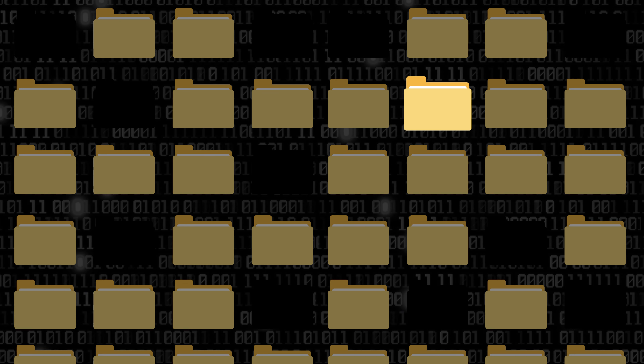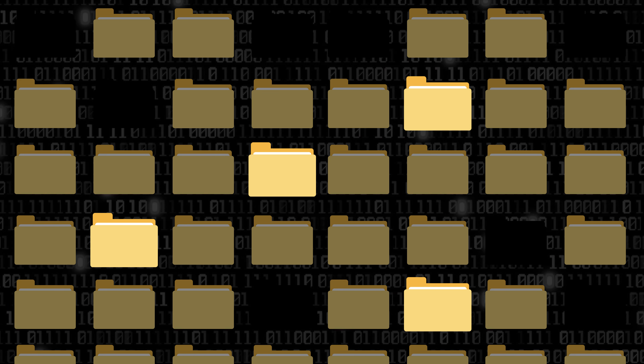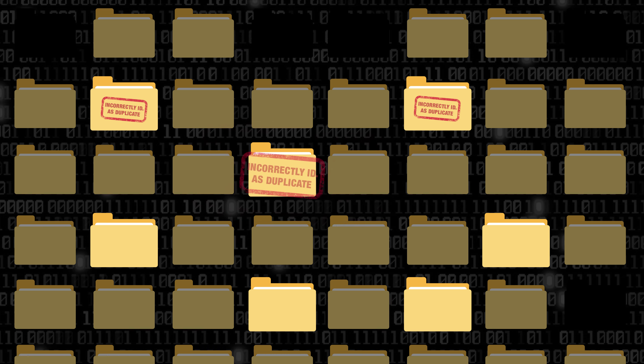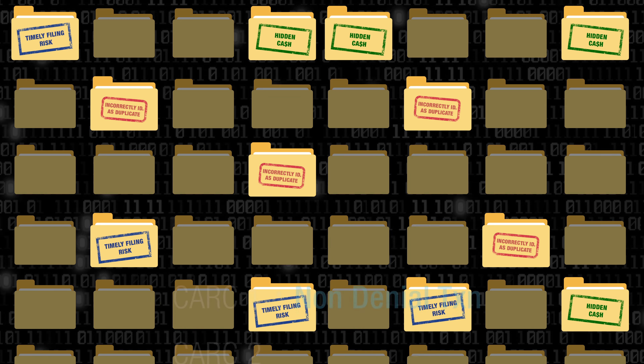Next, we expose the black holes in your system: denials incorrectly identified as duplicates, untouched or dormant denials at risk for timely filing, and other piles of hidden cash in your system.